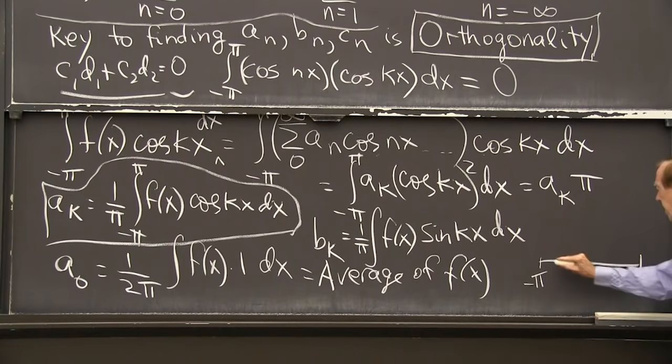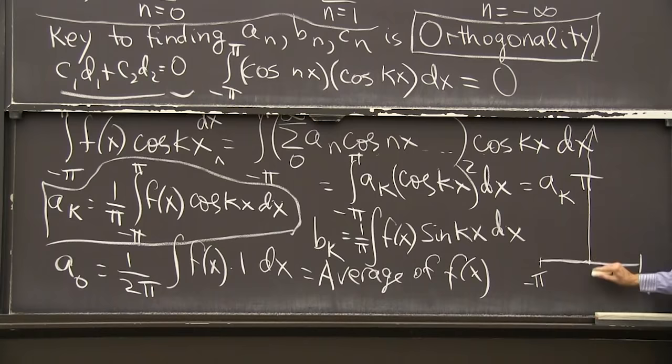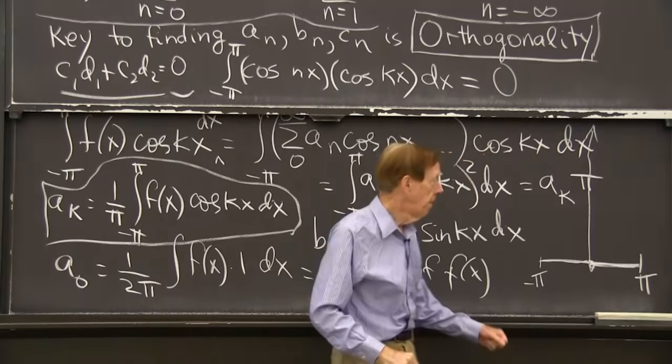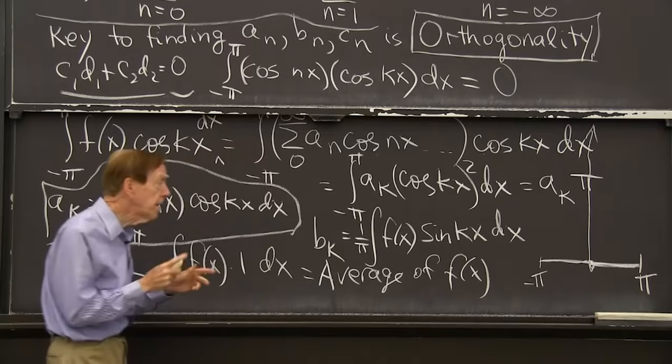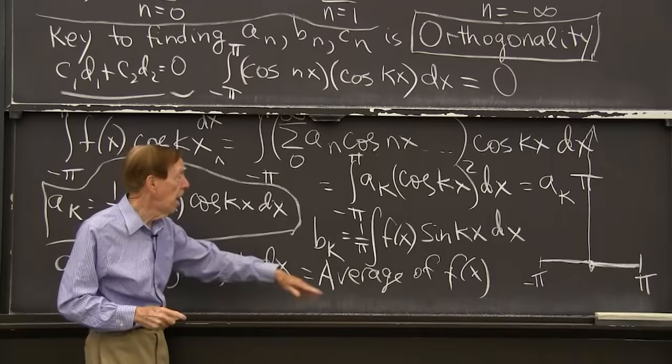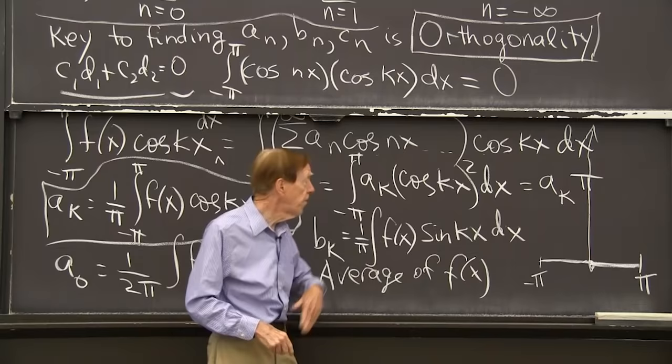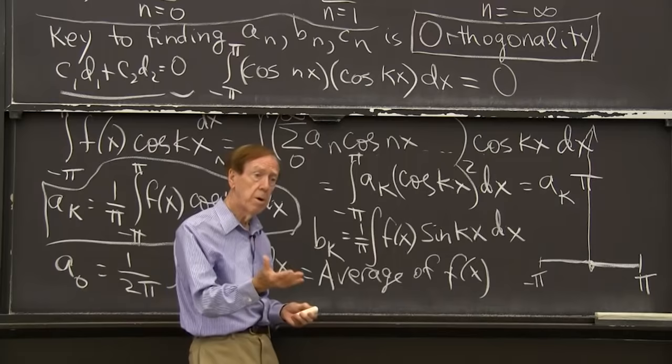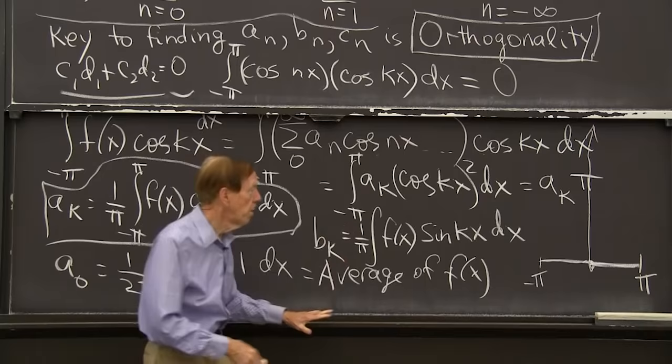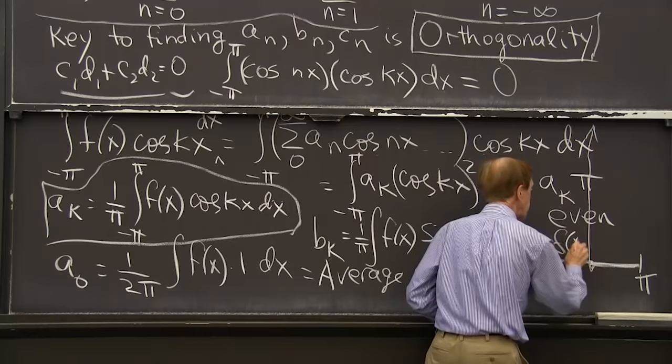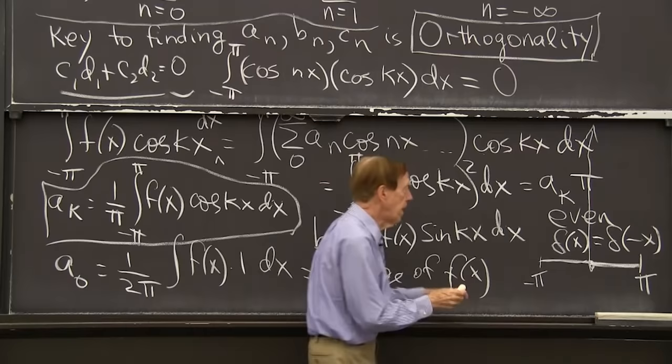So I plan to use these formulas on the delta function. Let me draw a little picture of the delta function. I'm only going between minus pi and pi. And the delta function, as we know, is 0. So it's infinite at the spike and 0 again. The reason I wanted to draw it is that's an even function. That's a function which is symmetric between x and minus x.